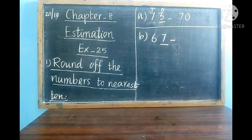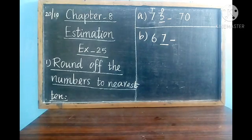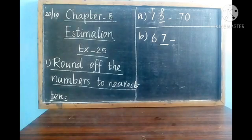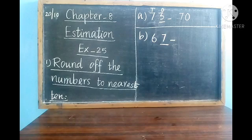Division B: the number is 67. We want to round off to nearest 10. In the ones place, 7 is there. 7 is bigger than 5. As 7 is bigger than 5, what is the next 10 of 60? 6 is in the tens place, so the next 10 is 70. Our answer is 70.